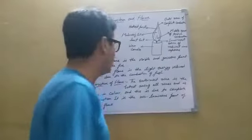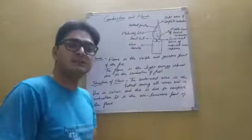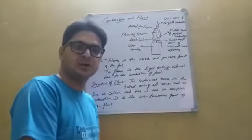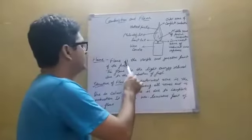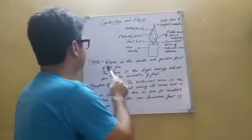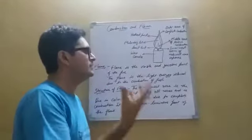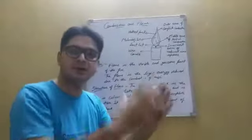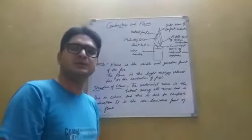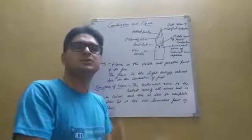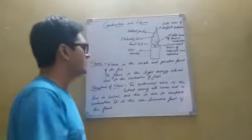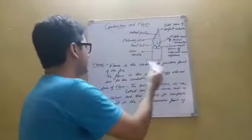Now we have a flame. The definition of flame: flame is the visible and gaseous part of the fire. It's a visible part that you can see burning, and obviously when something burns, gases are released. This is the visible and gaseous part of fire called flame.